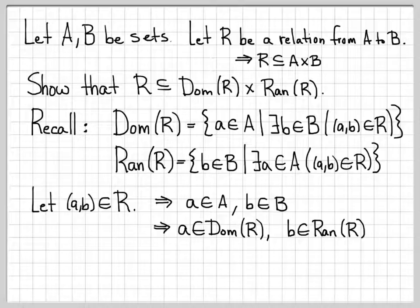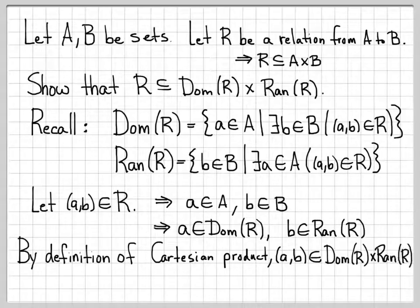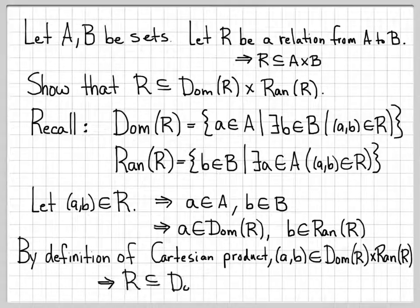So we started with an arbitrary element (a, b) in R. We now know that a is an element of the domain of R and b is an element of the range of R. By the definition of the Cartesian product, (a, b) is an element of domain(R) × range(R). Using the definitions of the domain and range of R, we were able to conclude that a is in the domain of R, b is in the range of R, and thus by the definition of the Cartesian product, (a, b) is in domain(R) × range(R). So R is a subset of domain(R) × range(R), and that's what we wanted to show.